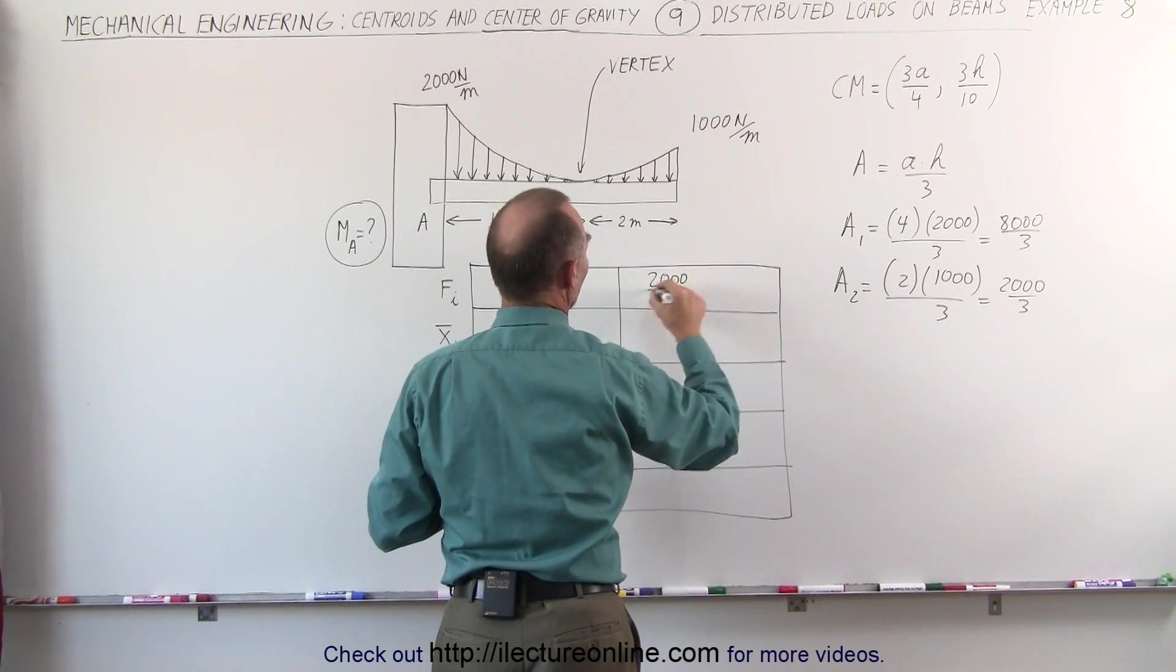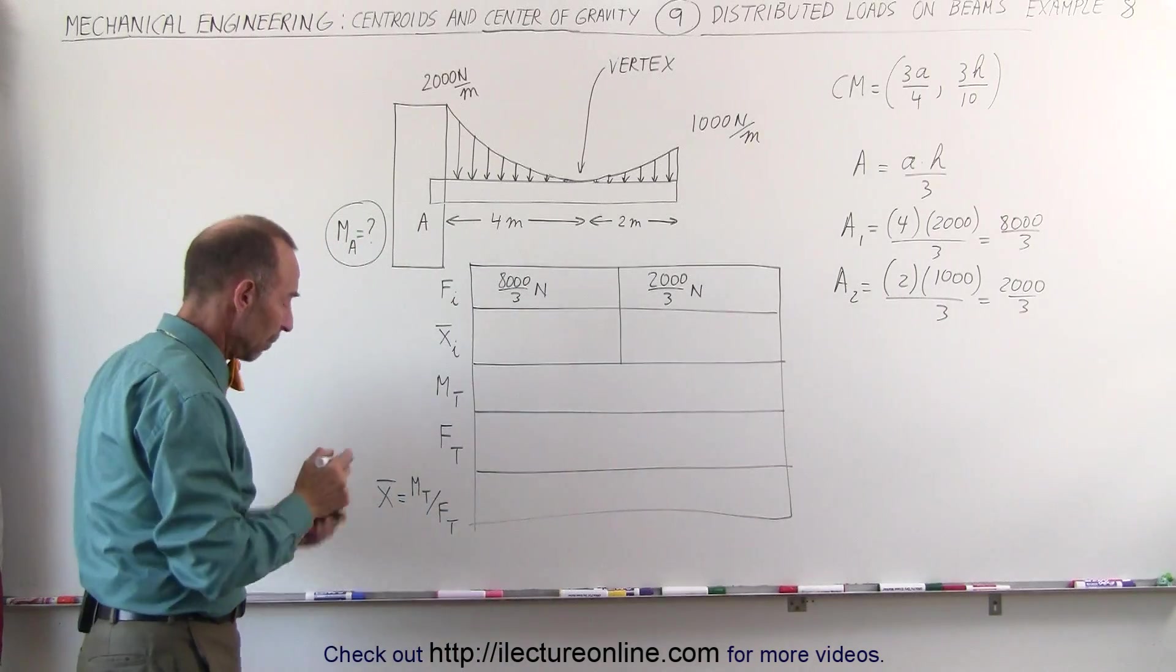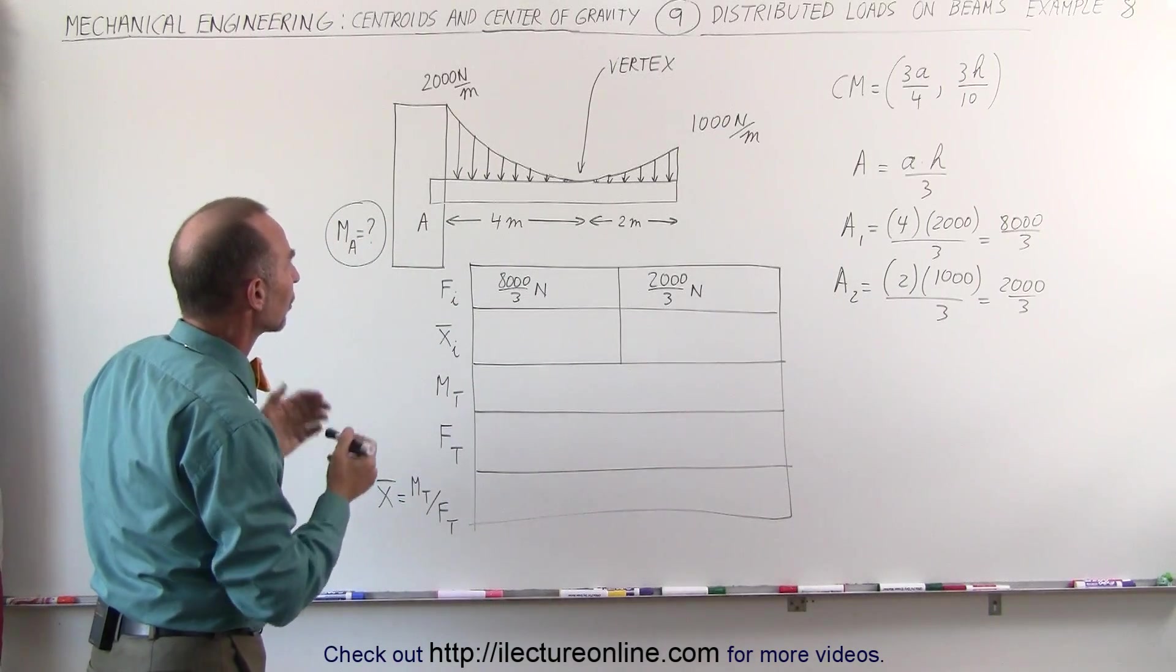2000 divided by 3 newtons. So that's how we find the force of those parabolic shapes or those parabolic load distributions.